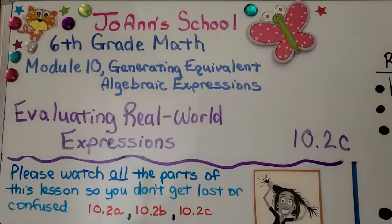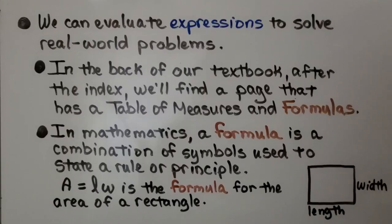Lesson 10.2c, Evaluating Real-World Expressions. We can evaluate expressions to solve real-world problems. In the back of our textbook, after the index, we'll find a page that has a table of measures and formulas. In mathematics, a formula is a combination of symbols used to state a rule or principle. If we have a rectangle, A = lw is the formula for the area of a rectangle. It's the length times the width.